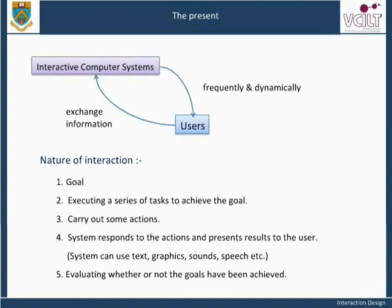Step 4: System responds to the actions and presents results to the user. The system can use text, graphics, sounds, speech, etc. Step 5: User looks at the results of their action and attempts to evaluate whether or not the goals have been achieved.